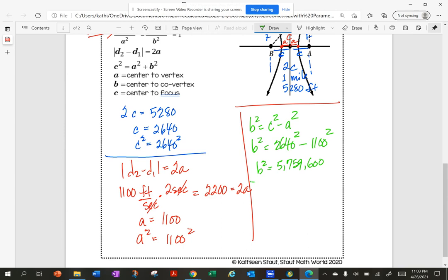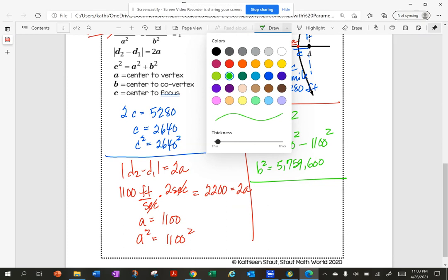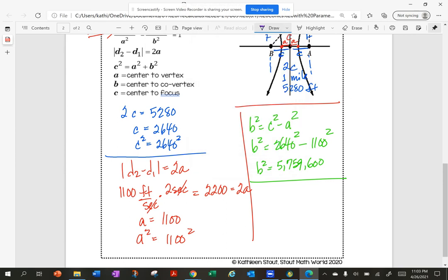So now I'm going to substitute into my equation. My center is at (0,0). So H and K are at (0,0). So my equation is x squared over 1,210,000, which is 1,100 squared, minus y squared over 5,759,600 equals 1.